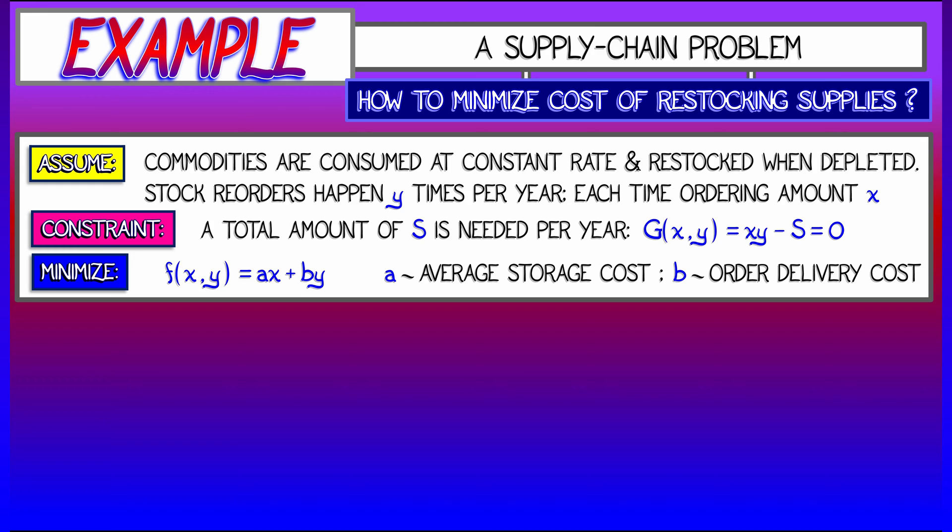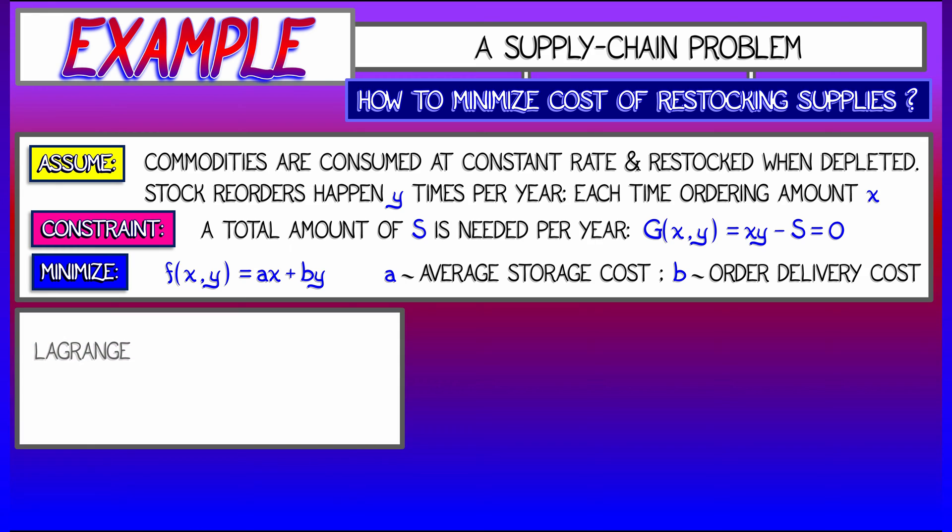That entails a cost. The second constant is the order delivery cost, b. If you just order once per day, you're going to be spending a ton of money in shipping fees and delivery costs. Okay, so there's the problem. There's the setup. Let's use Lagrange's method in order to minimize that cost subject to the constraint of how much you need per year.